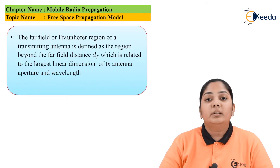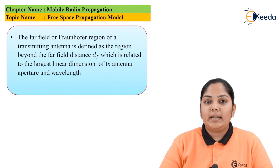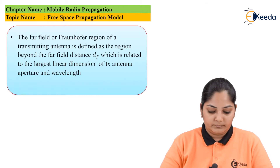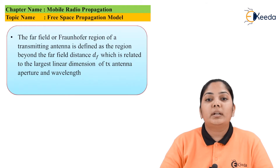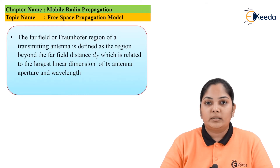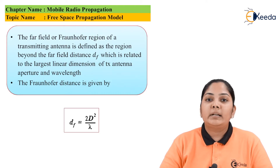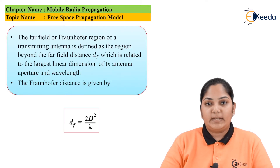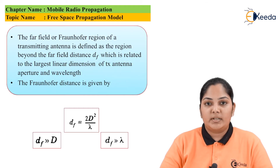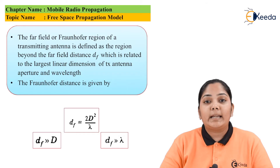The far field distance, or Fraunhofer distance, of a transmitting antenna is defined as the region beyond the far field at a distance df, which is related to the largest dimension of the transmitting antenna and the wavelength. The Fraunhofer distance is given as df = 2D² / λ, where D is the largest dimension of the antenna. The conditions are that df must be greater than D, and df must also be greater than λ.